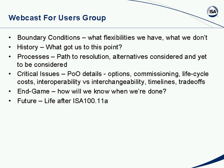We'll talk about the critical issues in the principles of operation, what options are included, how commissioning is done, the potential impact on life cycle costs, and what are the issues associated with interchangeability, timelines, and tradeoffs. Then we'll talk about an end game — how will we know when we're done, when the principles of operation are complete and we can start working on a standard, and how we'll know when the first standard is done. I'll also talk about the future — what happens after ISA 100.11a.